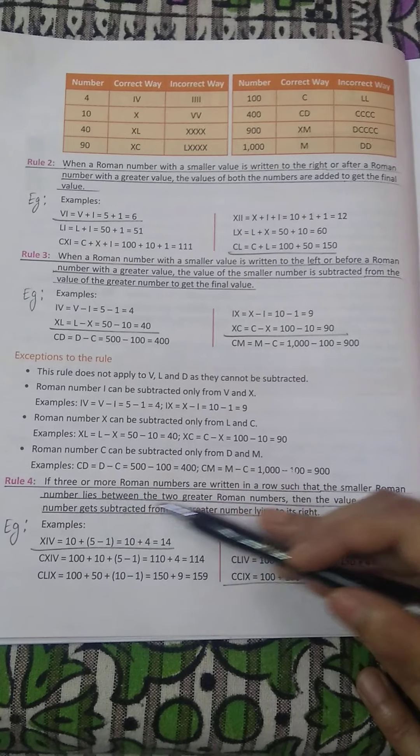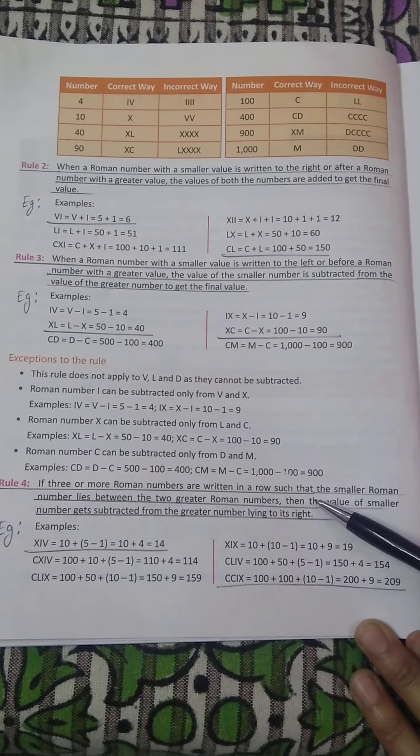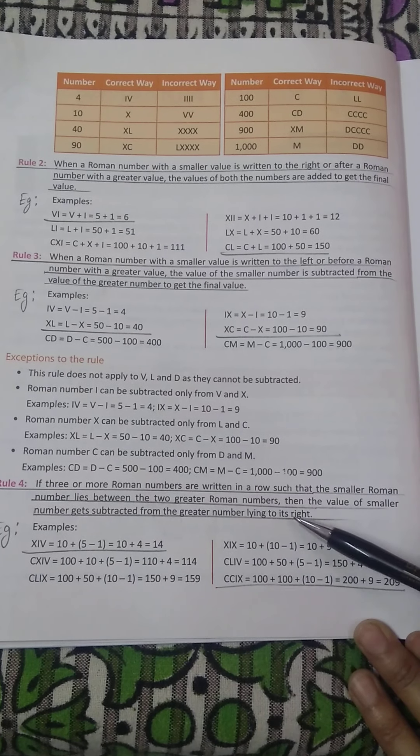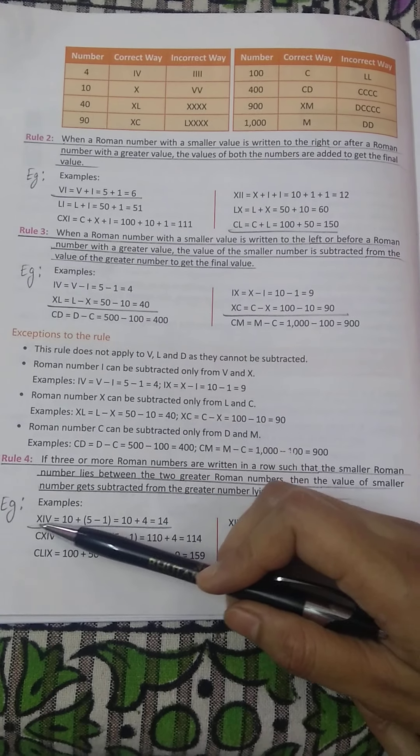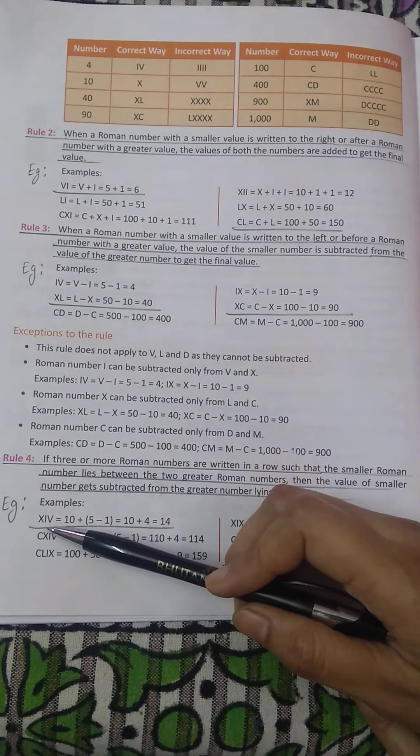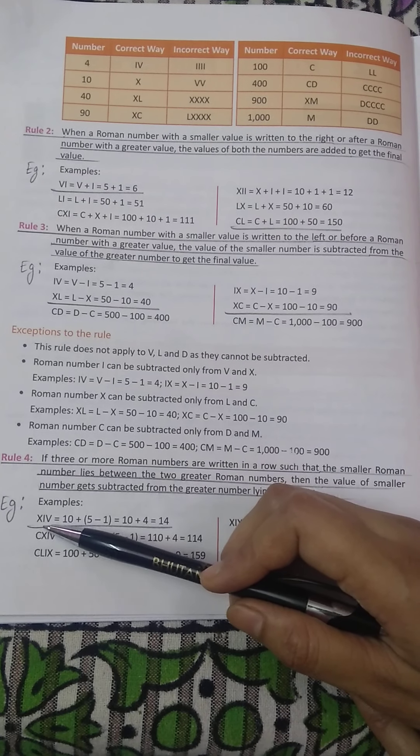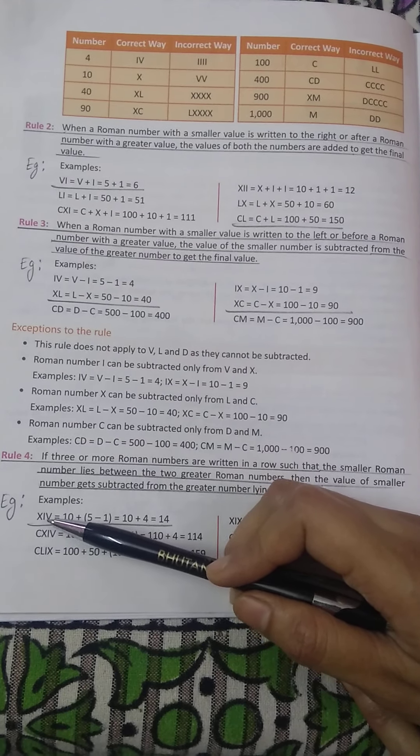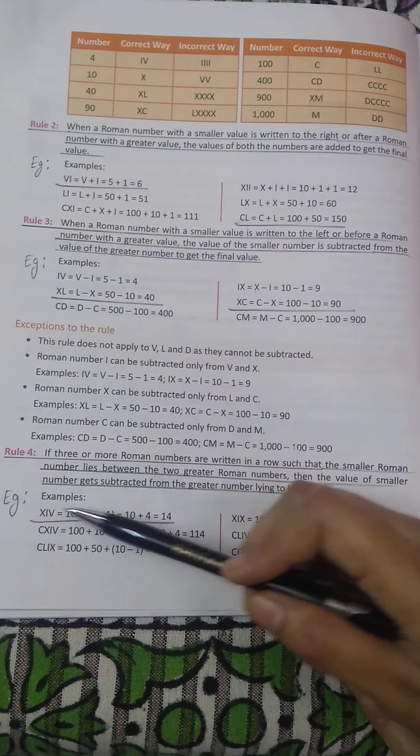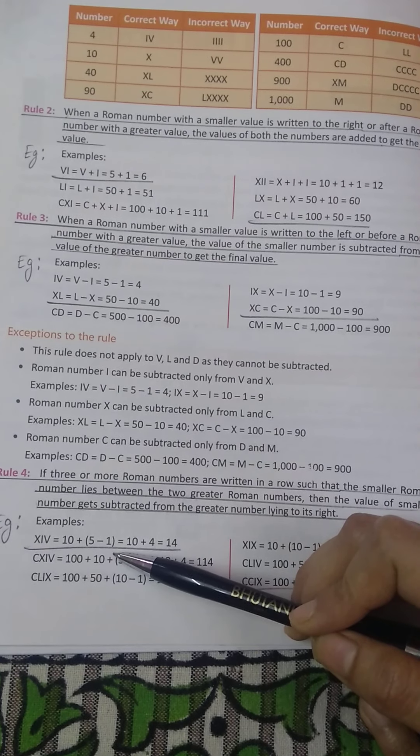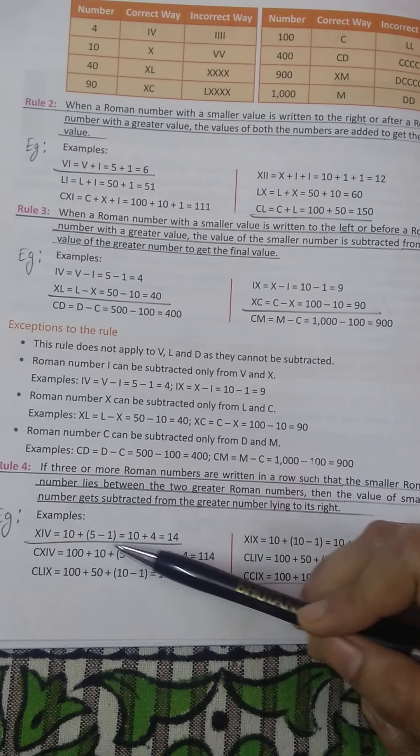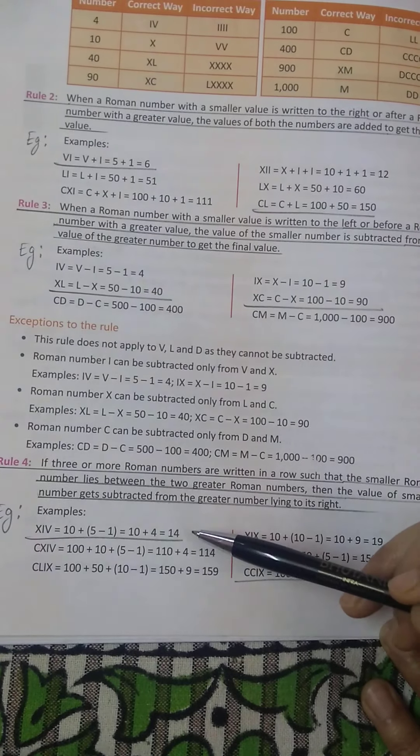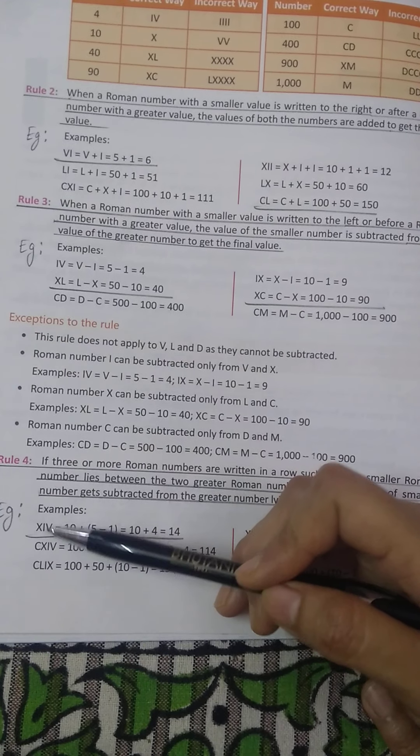After that rule number 4, students, completely you will write what it is. If three or more roman numbers are written in a row such that smaller roman number lies between the two greater roman numbers, then the value of smaller number gets subtracted from the greater number lying to its right. Take an example XIV. Here X is 10, I is 1, V is 5. So we will look at the smallest roman numeral that is 1. If 1 is written on the left hand side of a greater we will subtract. So this I will not add it to this 10, rather this I will be subtracted from the next greater number. So that is how X is 10 plus IV is 5 minus 1, isn't it? IV 5 minus 1, 10 plus 4 is equal to 14. So this is how we write 14. What is 14? If you write the expanded form of 14 that is 10 plus 4. So first write 10 in the roman numeral and then write 4.